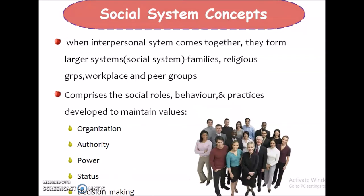The last one is the social system concept. The social system is formed when interpersonal systems come together to form larger systems. For example, it can be family, religious group, workplace and peer group. These are all examples of the social system.